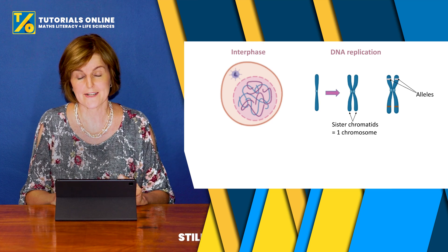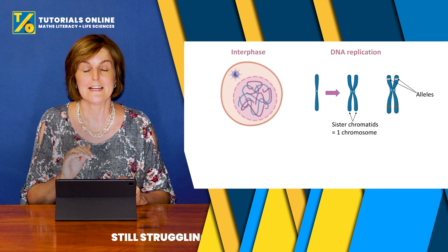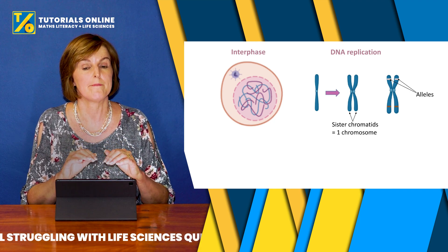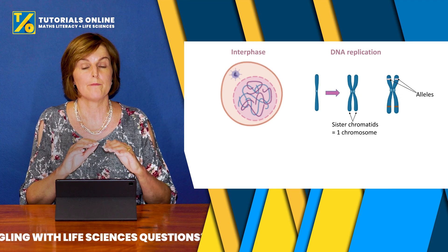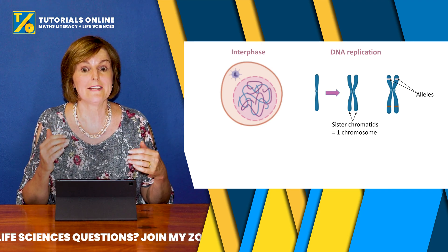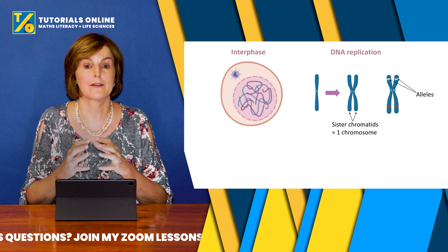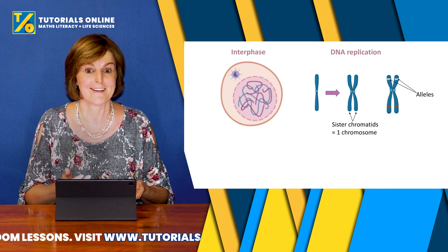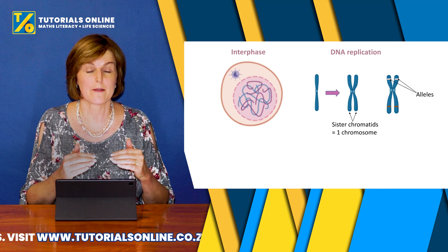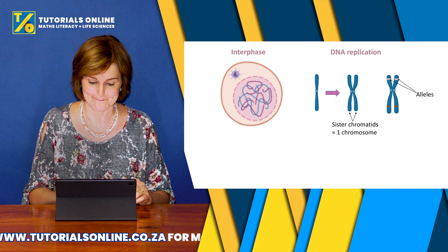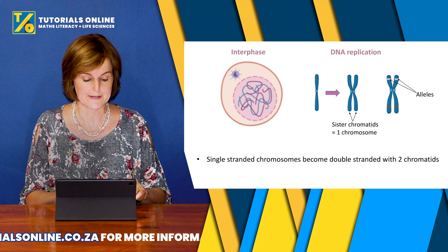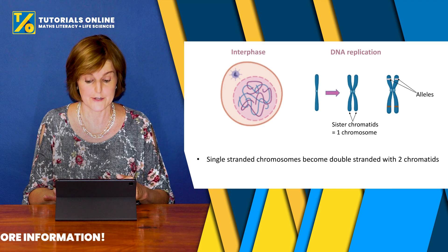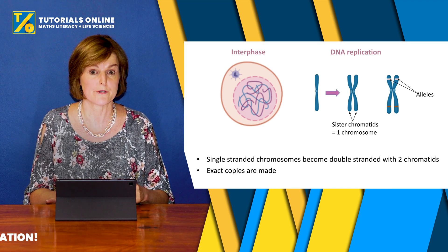On the chromosome you have alleles. An allele is a variation of a gene. So you might have the gene for eye colour, but one allele on one chromosome might code for green eyes, and on another one maybe from the father it codes for brown eyes. They're coding for the same thing — eye colour. Single-stranded chromosomes become double-stranded with two chromatids during DNA replication in the interphase, and exact copies are made.